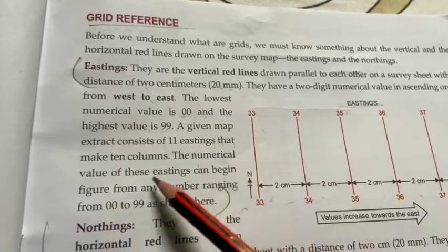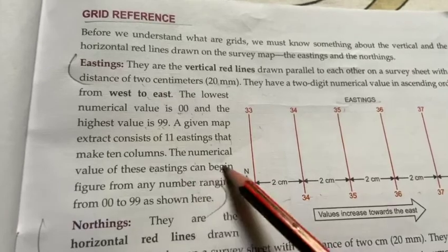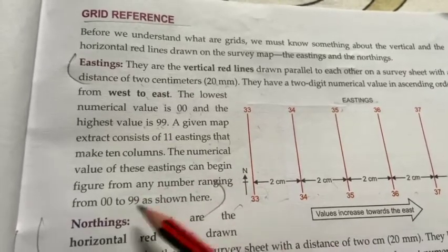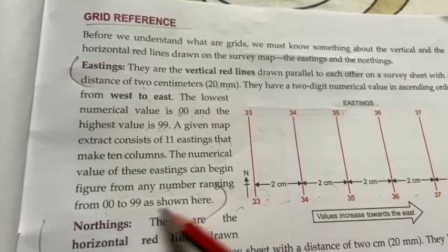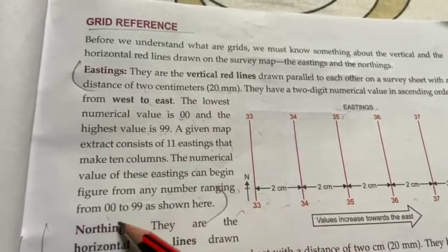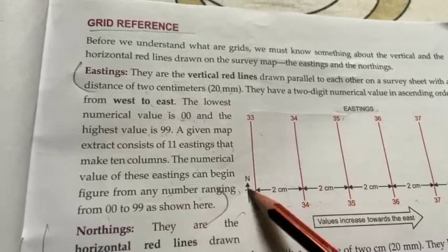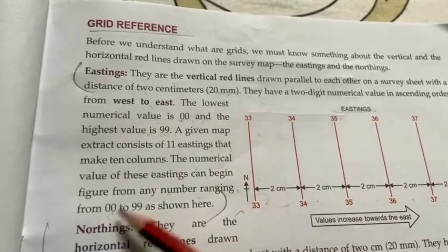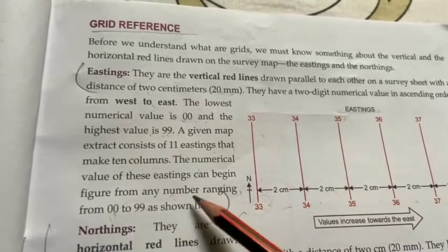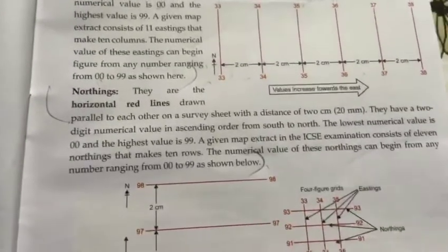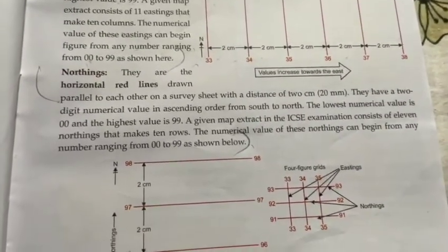The numerical value of these eastings can begin from any number ranging from 0 to 99। Numerical value 0 से लेकर 99 के बीच में कहीं भी हो सकती है, लेकिन 2 digits use होंगे — 00 से शुरू होकर 01, 02 ... 99 तक जाती हैं। इसी तरह से same rules northings पर भी apply होते हैं।